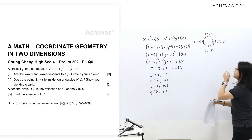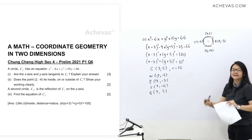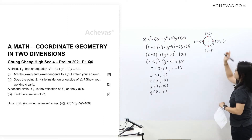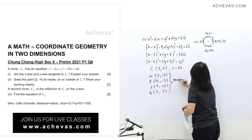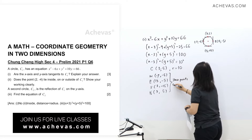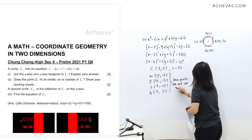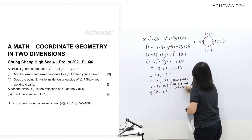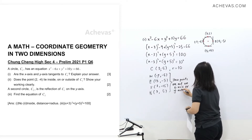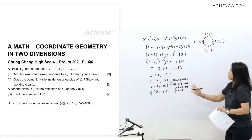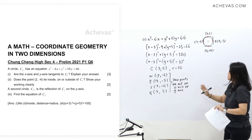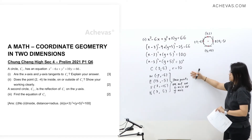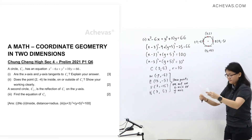Notice that they want to check whether the x-axis and y-axis are tangents. Notice that none of these four points fall on either axis. So we can conclude these points are not on the x-axis or y-axis.